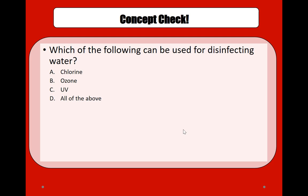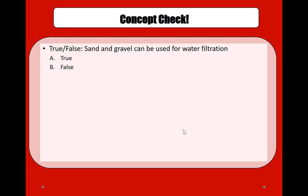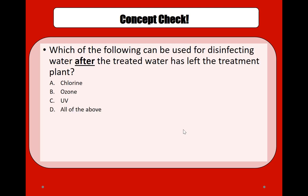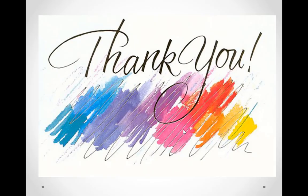Now let's do some quick concept checks. Which of the following can be used for disinfecting water? That's correct — all of the above: chlorine, ozone, and UV can all be used for disinfecting water. Sand and gravel can be used for water filtration — that's true. As part of the water filtration process, sand, gravel, and activated carbon are used to remove suspended particles. Which of the following can be used for disinfecting water after treated water has left the treatment plant? Only chlorine — ozone and UV do not have residual disinfection capability; only chlorine does.